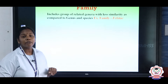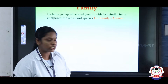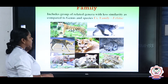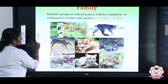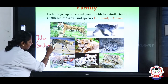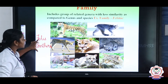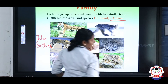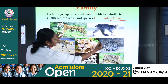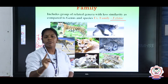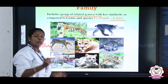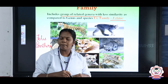Now we are going to study about family. Two or more genera combined together form a family. For example, the family Felidae includes two genera: Felis, which is the cat genus, and Panthera, which is the lion genus. Panthera includes Panthera tigris and Panthera leo. So the genus Felis and genus Panthera both come under the same family Felidae. Family is thus a group of related genera.